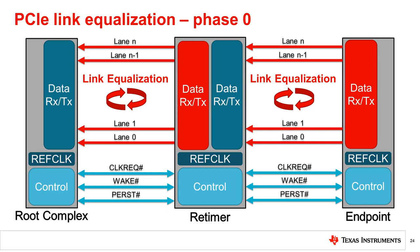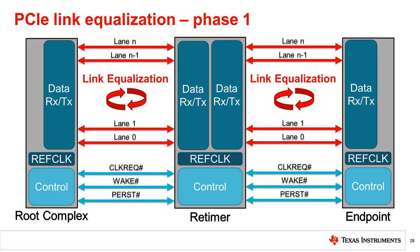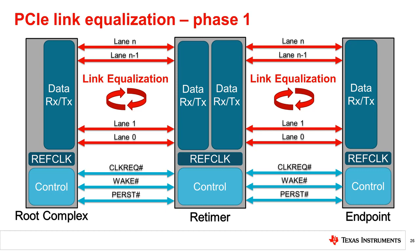Shortly after receiving the downstream port's request, the upstream port increases the data rate of the link to Gen 3 and begins transmitting training sequences back to the downstream port using the desired presets. After the link has been increased to Gen 3 speeds, the link EQ process continues to optimize the link by sending preset values back and forth to negotiate the preset configuration for each port. The goal of phase 1 of the link EQ process is to allow the link to be optimized enough to exchange training sequences and complete the remaining link EQ phases for fine tuning. During this phase, identical training sequences will be sent repeatedly to ensure the correct presets are received, despite the possibility of poor link quality.